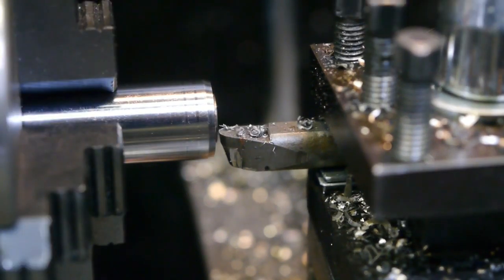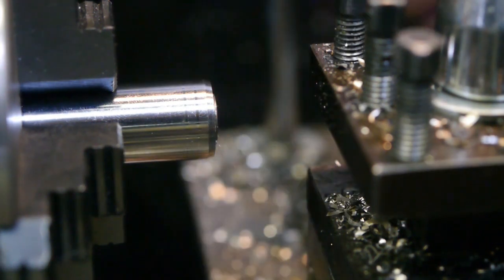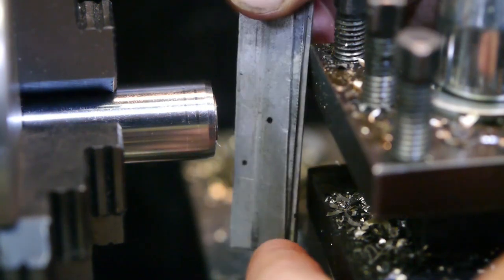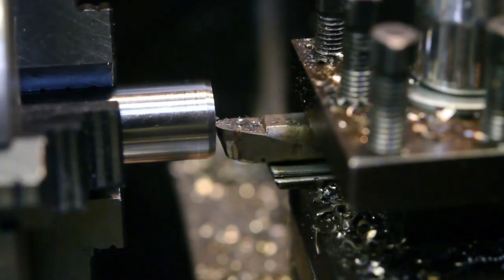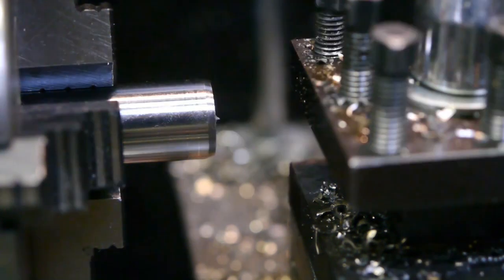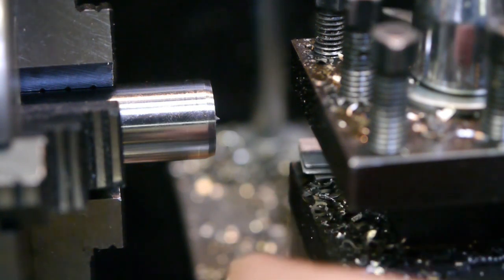Looks like my cutter is a bit low. So let's add a little shim. These round cutters really mess up the shims. Yeah something went wrong. Now I'm a bit too high. I don't know. Maybe I should get a quick change tool post.